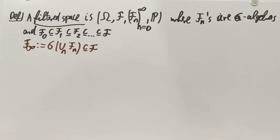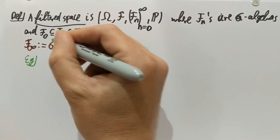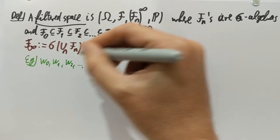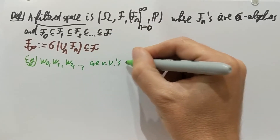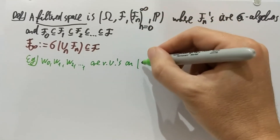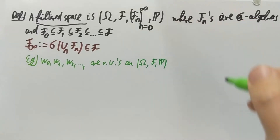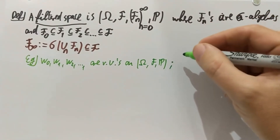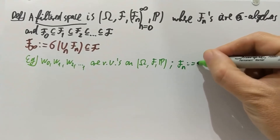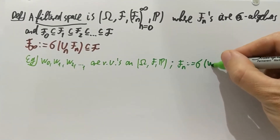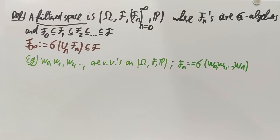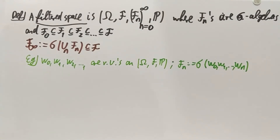I also want to make an example. Suppose that W_0, W_1, W_2, and so on are random variables on a probability space (Ω, F, P). Then one useful and often-used way to generate a filtration is to take F_n to be the sigma algebra generated by the first n of these random variables — in other words, it's the collection of all events which are completely determined by the values of W_0 up to W_n. That's a good way to do a filtration.